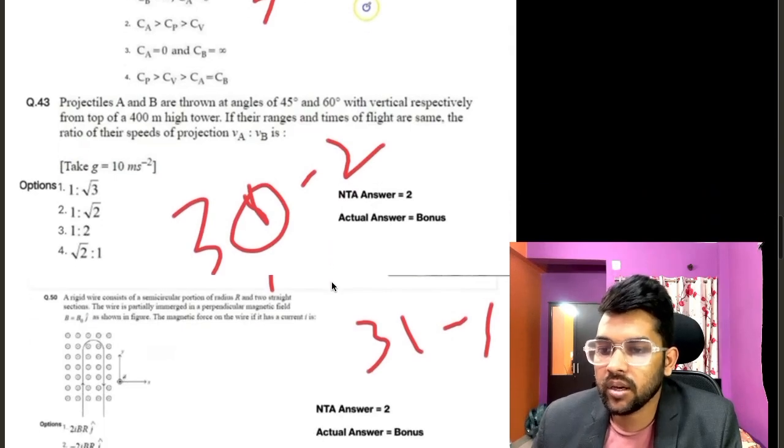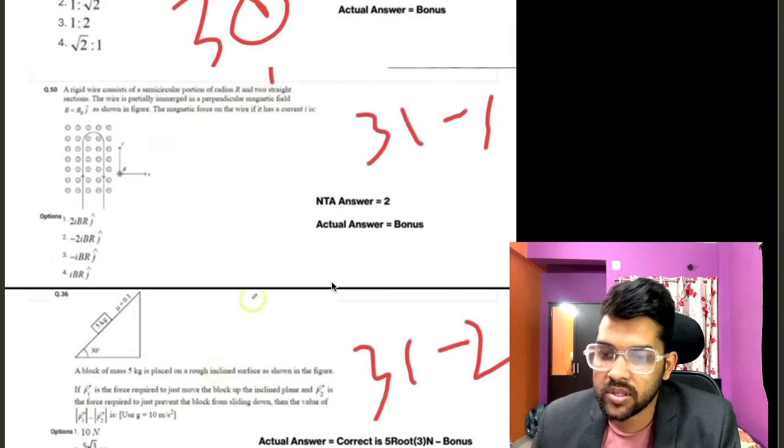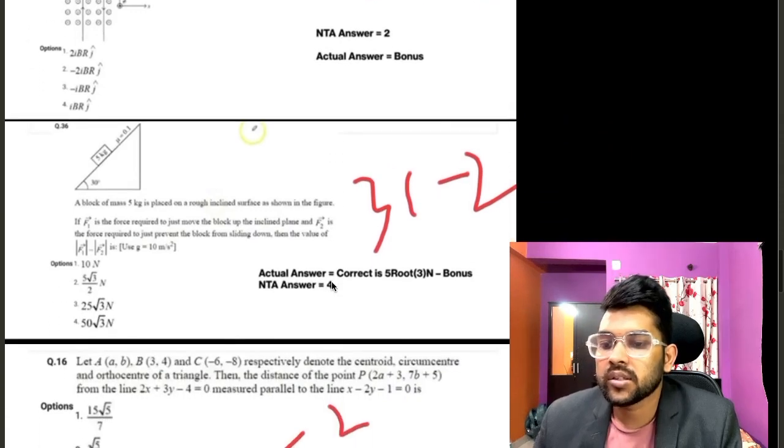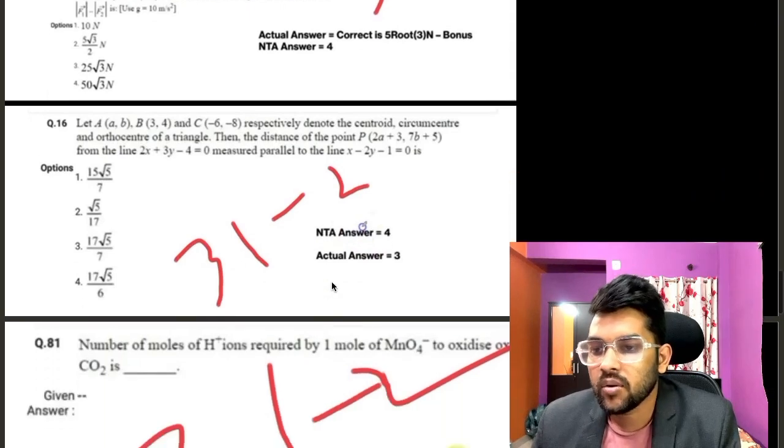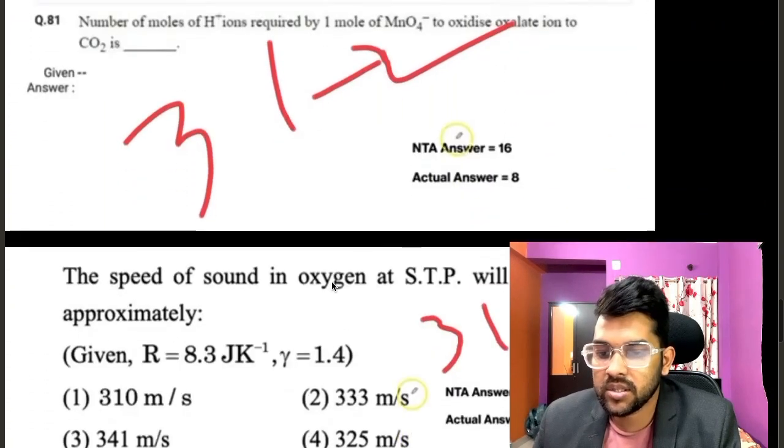30th shift 2, one question is having problem, that is bonus. 30th first shift, one question has bonus. 31st second shift is having maximum number of bonus and error: one bonus, second is error, third is error, fourth is again error.